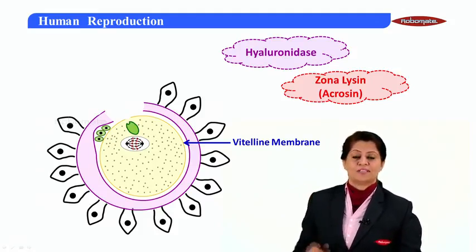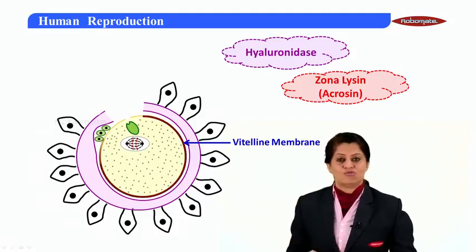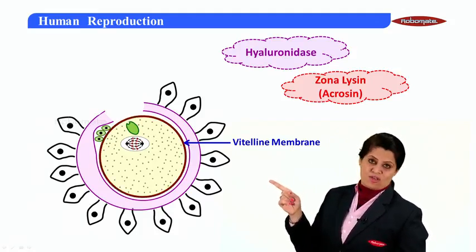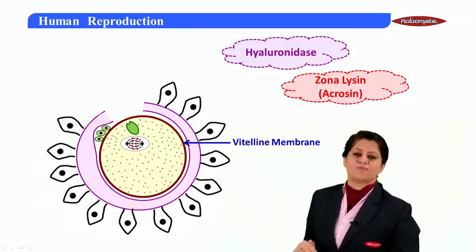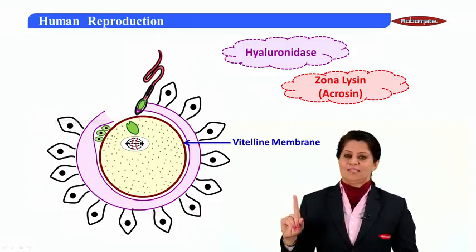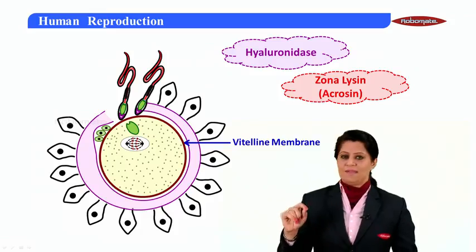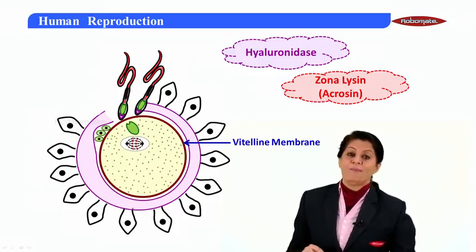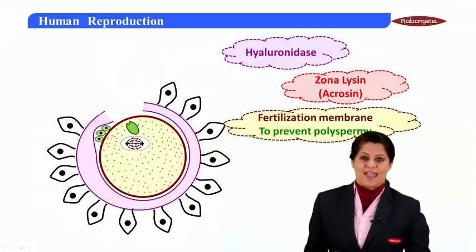Simultaneously, the vitelline membrane transforms into a membrane we call the fertilization membrane. The purpose of this is that once the fertilization membrane is formed, no other sperm can penetrate through the egg. This means the fertilization membrane prevents polyspermy — no other sperm can enter the egg.